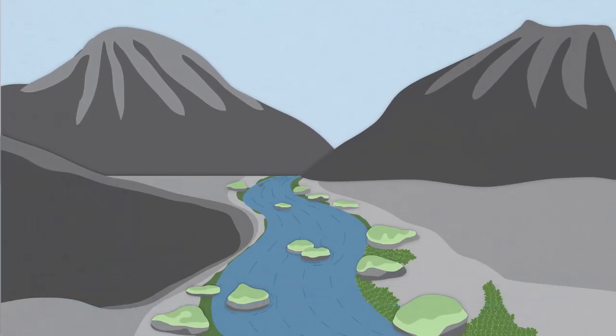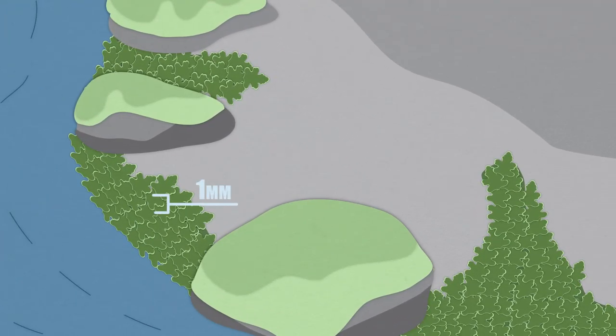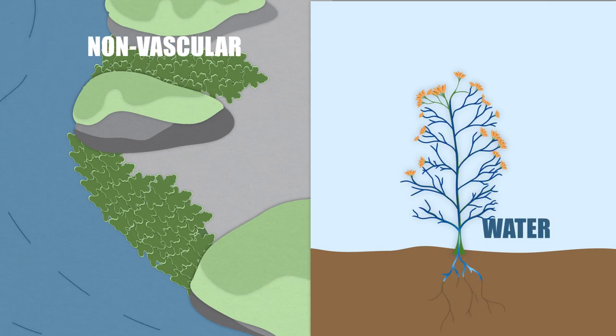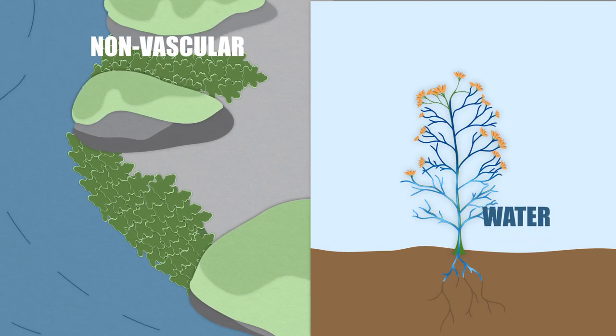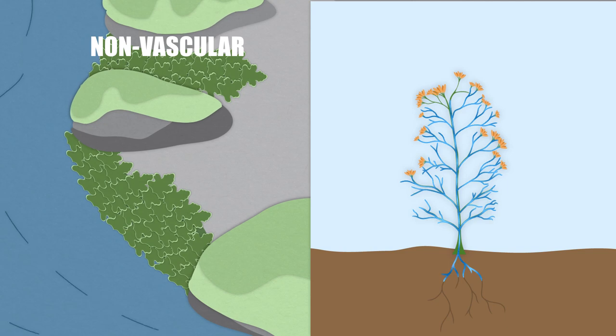The first plants on land were tiny. They didn't have roots or a vascular system. Plants use roots to take up water from the soil. Because these early plants didn't have roots they had to live close to water like rivers and ponds.